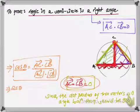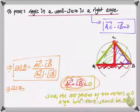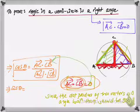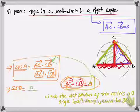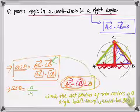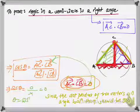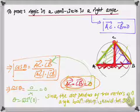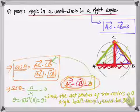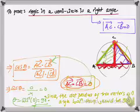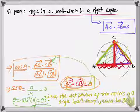Plugging in: cos θ = 0 divided by the product of the magnitudes, which equals zero. Therefore θ = cos⁻¹(0) = 90 degrees. In this way we have proven that the angle in a semicircle is a right angle. I hope that is clear — thanks for watching.